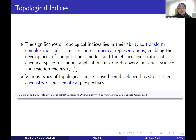The significance of topological indices lies in the ability to transform complex molecular structures into numerical representations, enabling the development of computational models and the efficient exploration of chemical space for various applications in drug discovery, material science, and reaction chemistry. Topological indices have many applications — normally in drug discovery, material science, reaction chemistry, and actually many more.